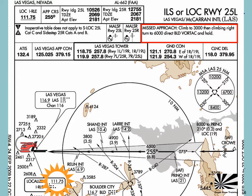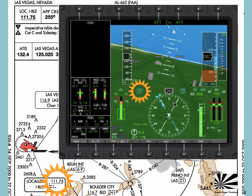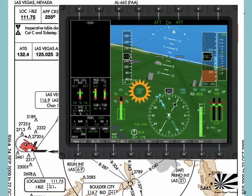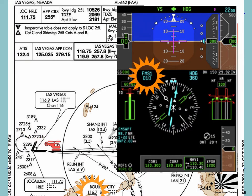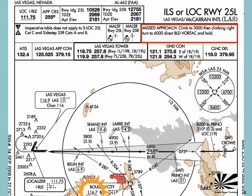For the missed approach procedure seen here, the pilot may choose to use VOR navigation to get to the holding fix. This of course means selecting a VOR which he has tuned to the correct frequency. Or he can use FMS, as long as the missed approach procedure is selected in the flight plan. Either way, taking a couple of seconds to check the selection before committing to it will prevent a deviation from the desired flight path.